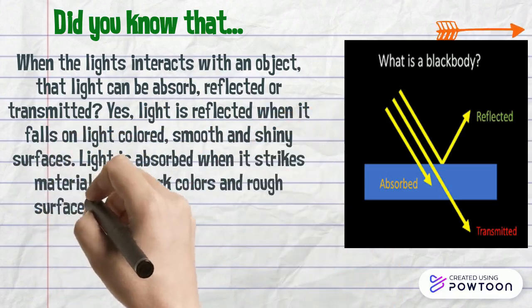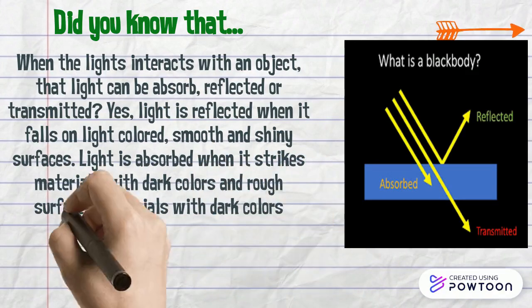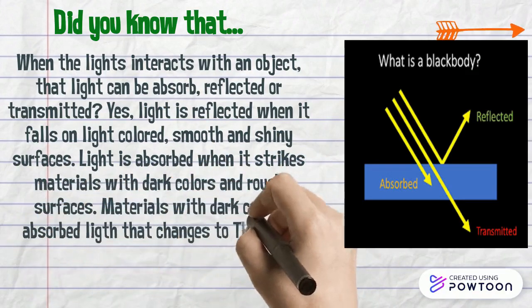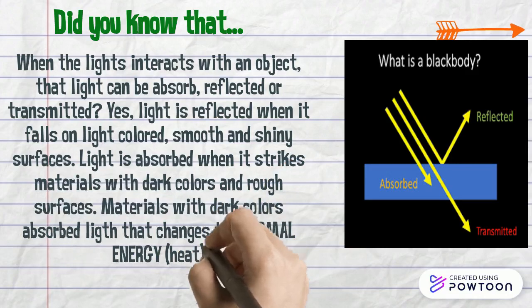Light is absorbed when it strikes materials with dark colors and rough surfaces. Materials with dark colors absorb light that changes to thermal energy.